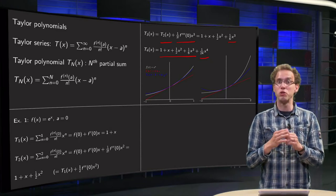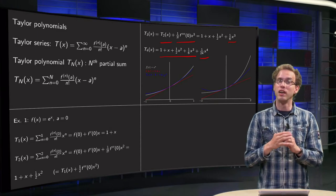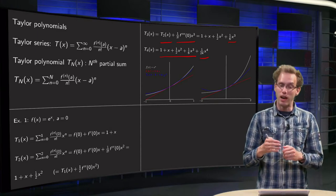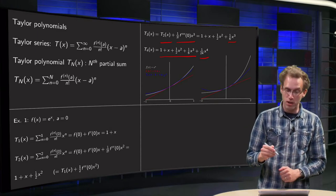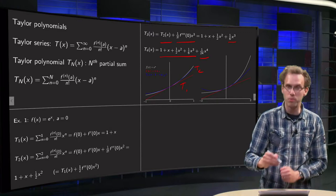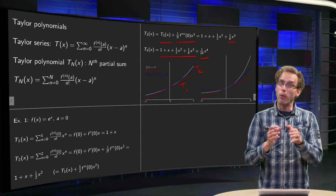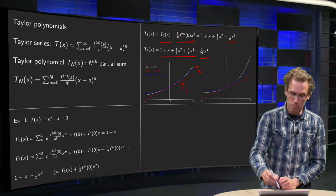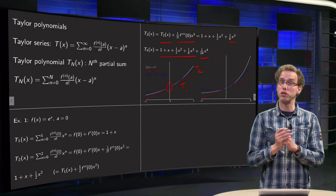So the white curve is always the exponential function, and now we are going to plot in the first picture, the red one is the T1, and the blue one the T2. And you see close to zero, they both approximate the function pretty well.